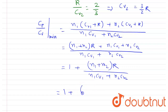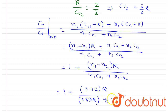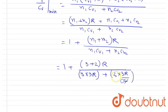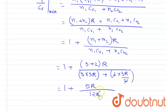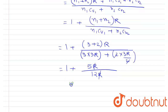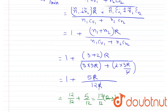The expression becomes 1 + (3 + 2)·R / (3·3R + 2·3R/2) = 1 + 5R / (9R + 3R) = 1 + 5R/12R = 1 + 5/12 = 17/12.